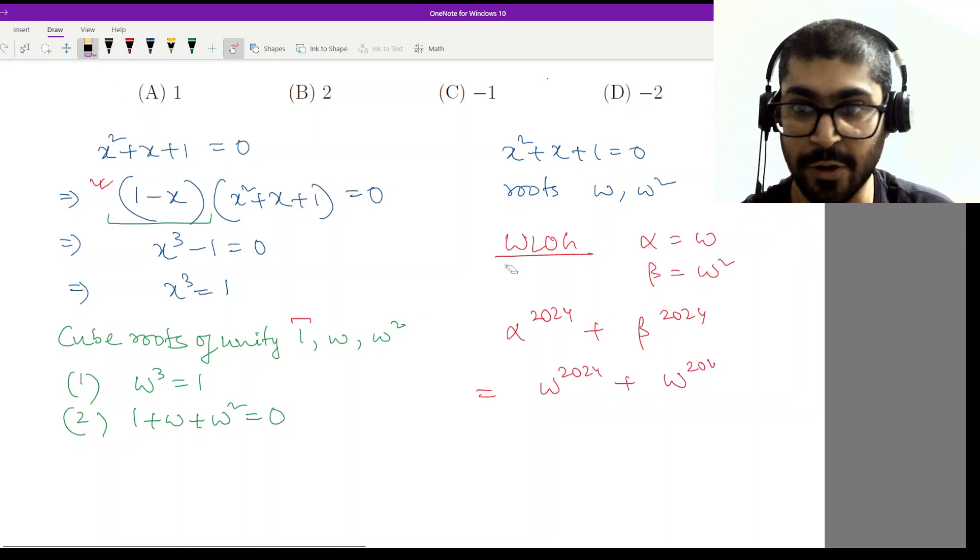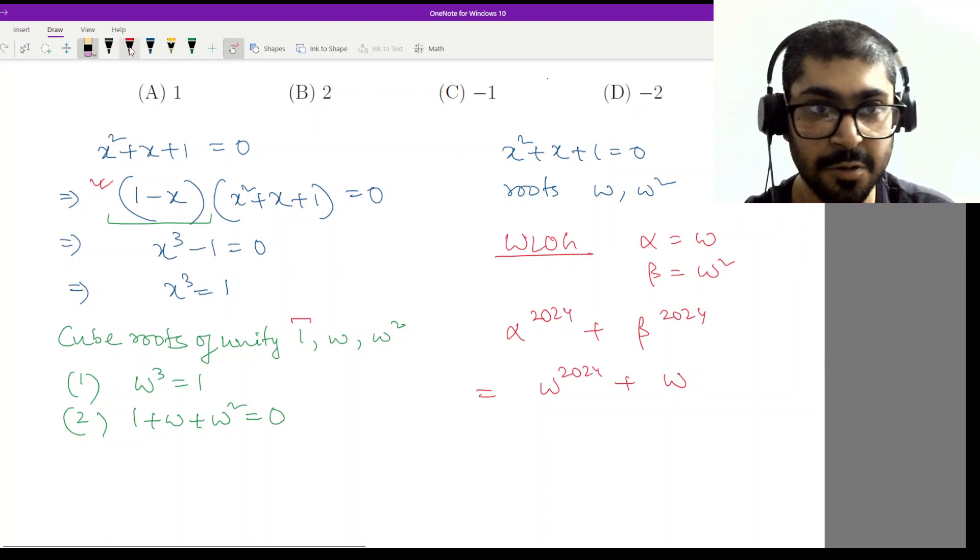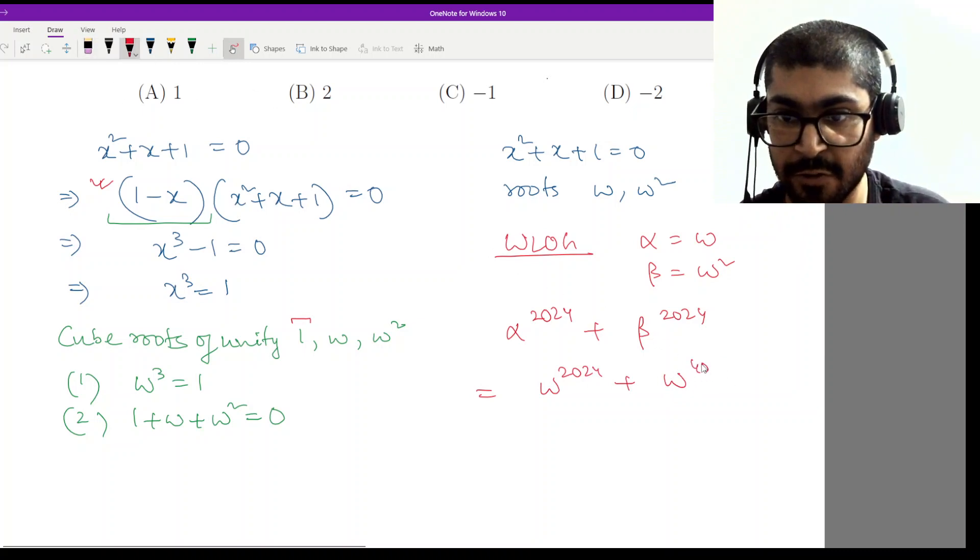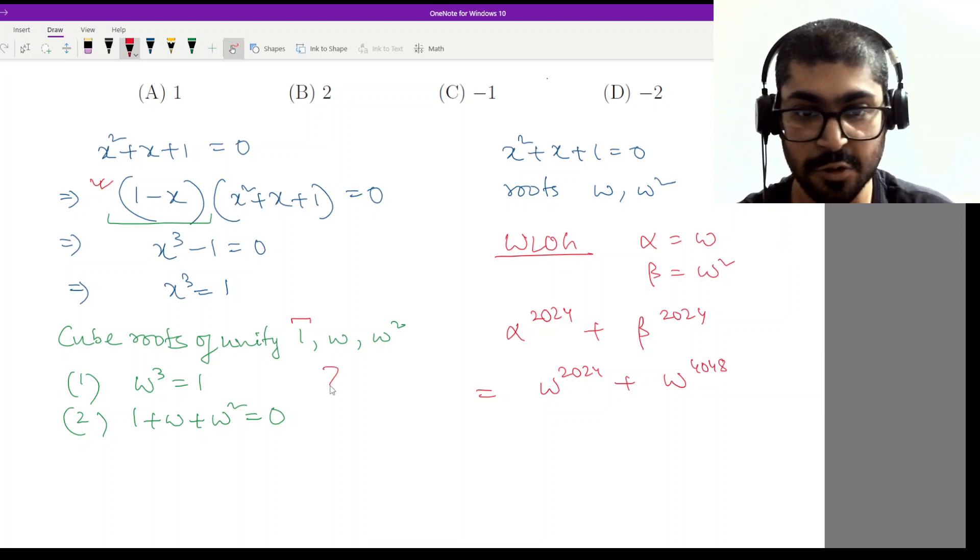Oh, I'm sorry. It'll be 4048, right? Because it's twice. So twice we are getting 4048. Now we will use these two properties.